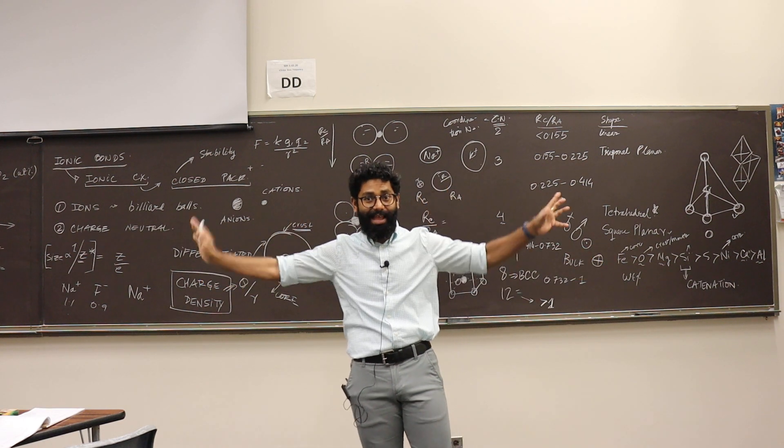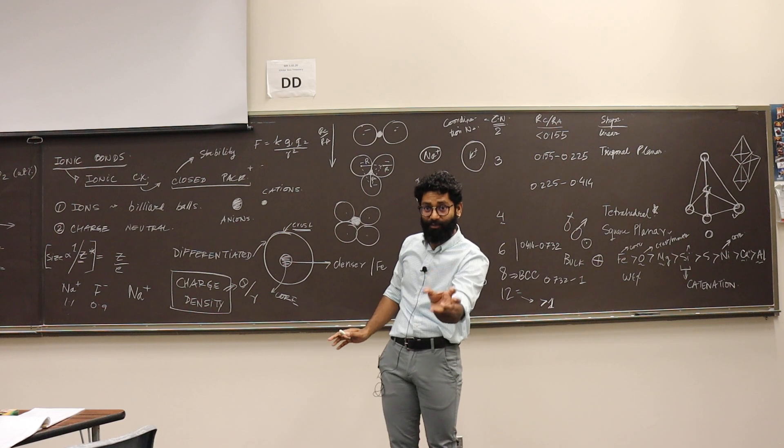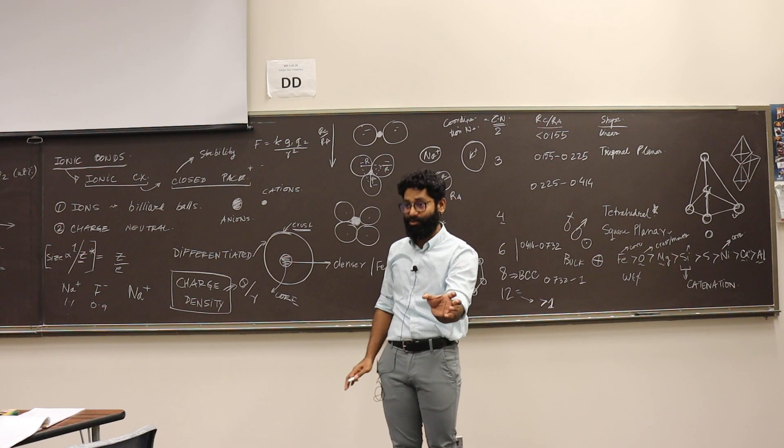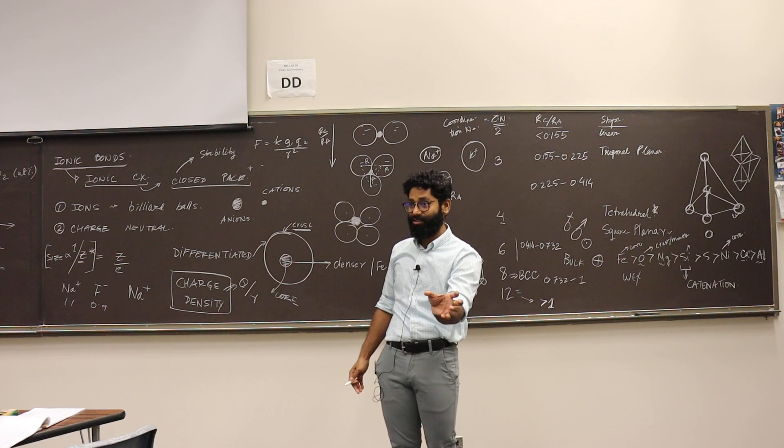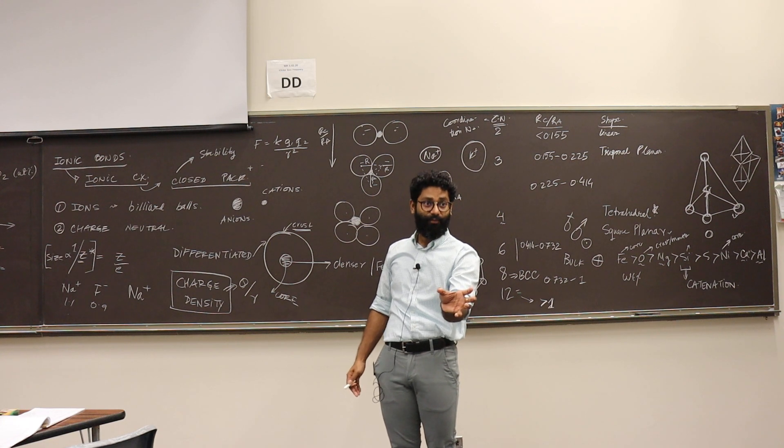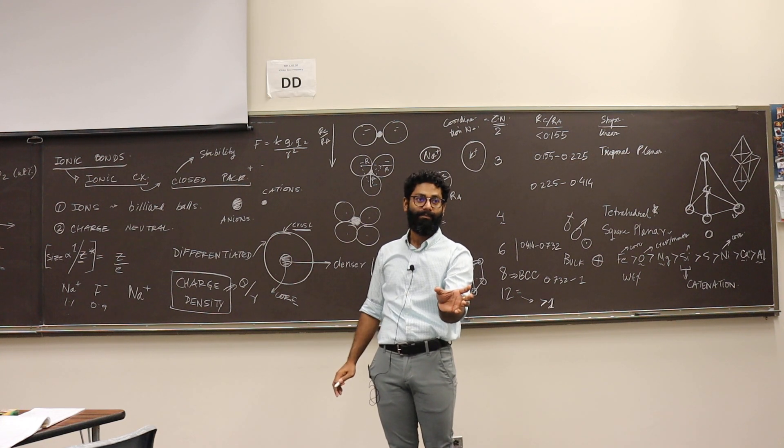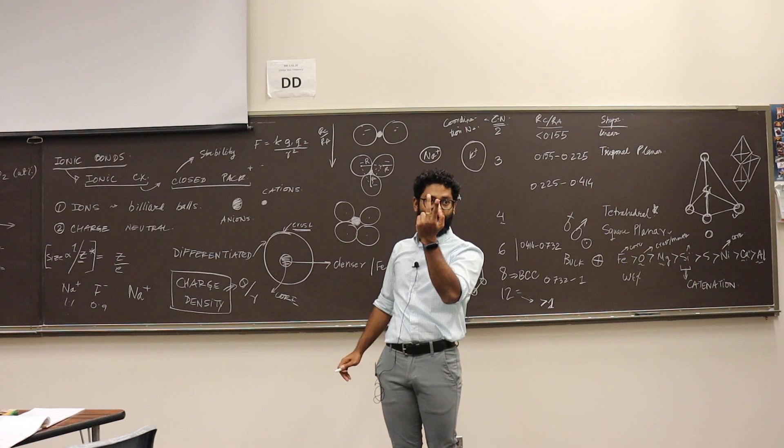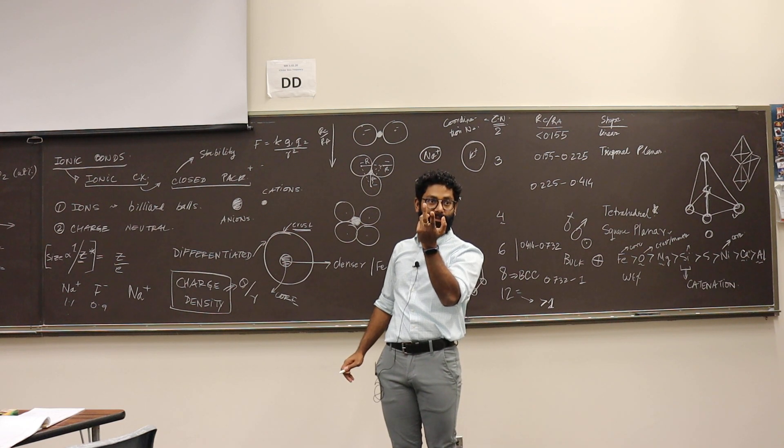So the hydration shell that a smaller cation forms is much larger than the hydration shell that is formed by a bigger cation, because the charge density is reversed.